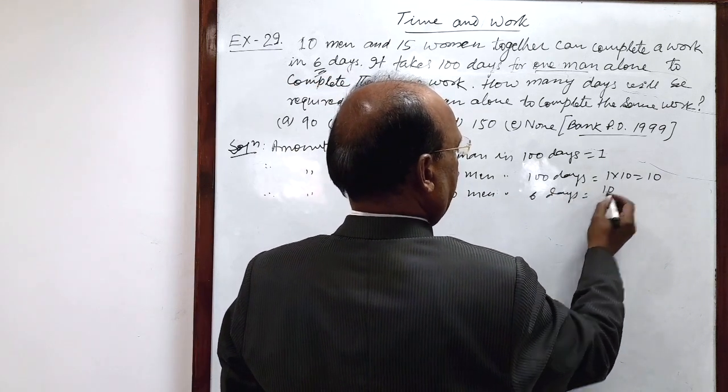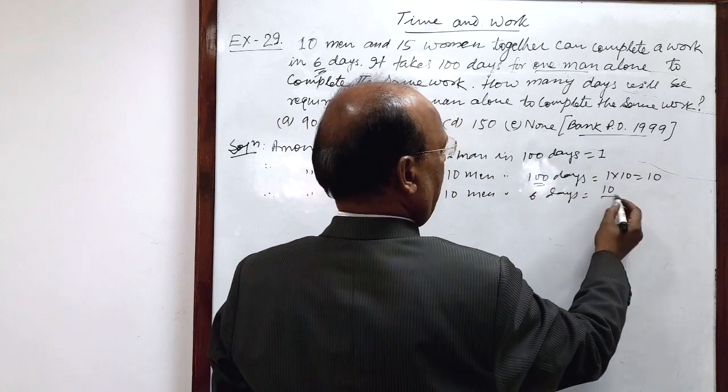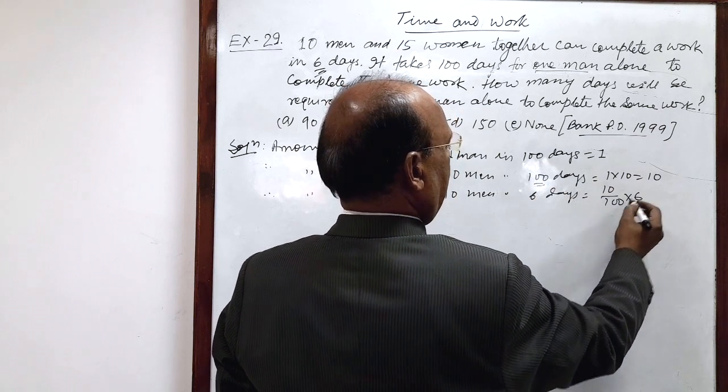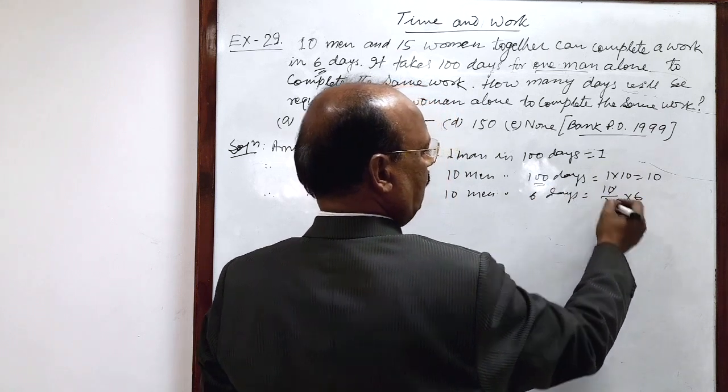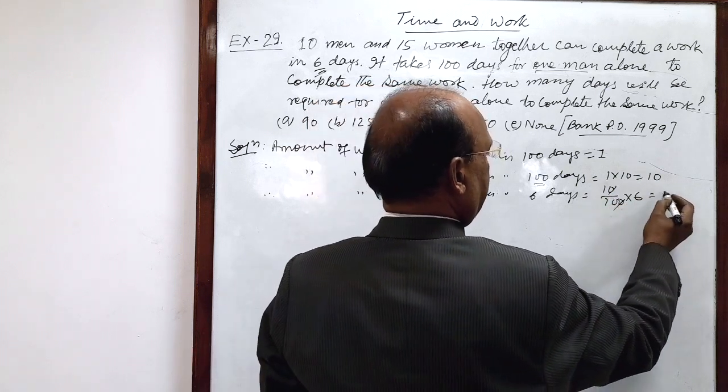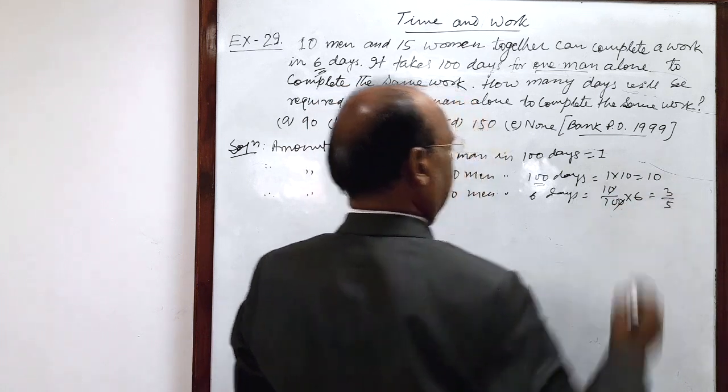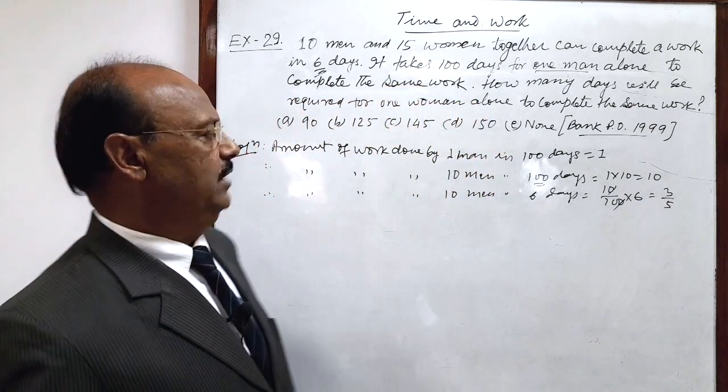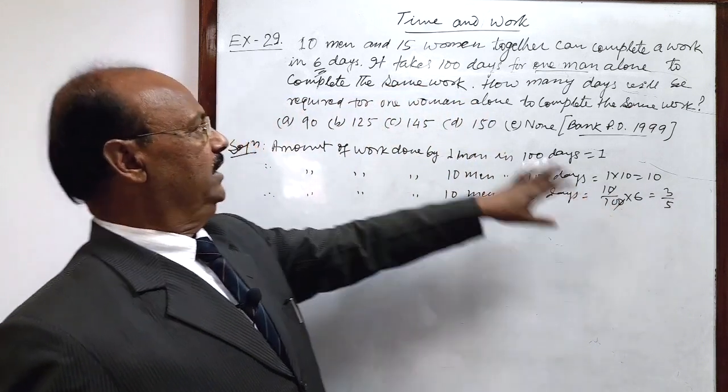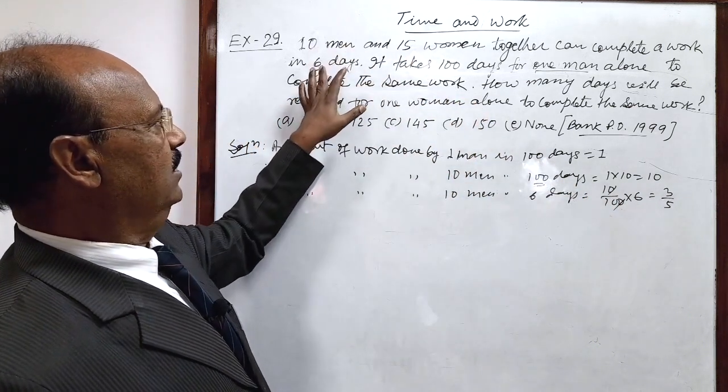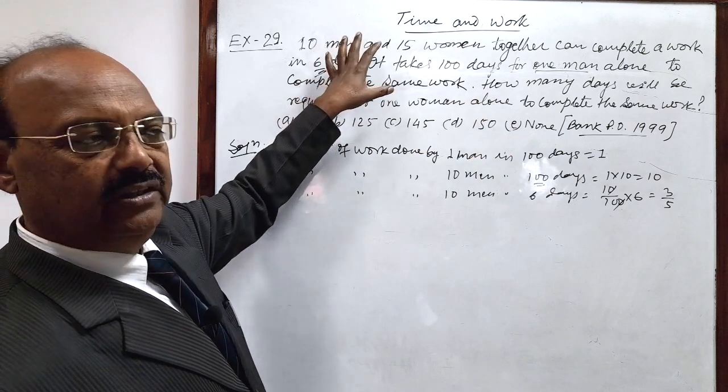6 days is equal to 10 by 100 into 6, so 6 by 10, this is 3 by 5. So 3 by 5 of the work has been done by 10 men in 6 days.